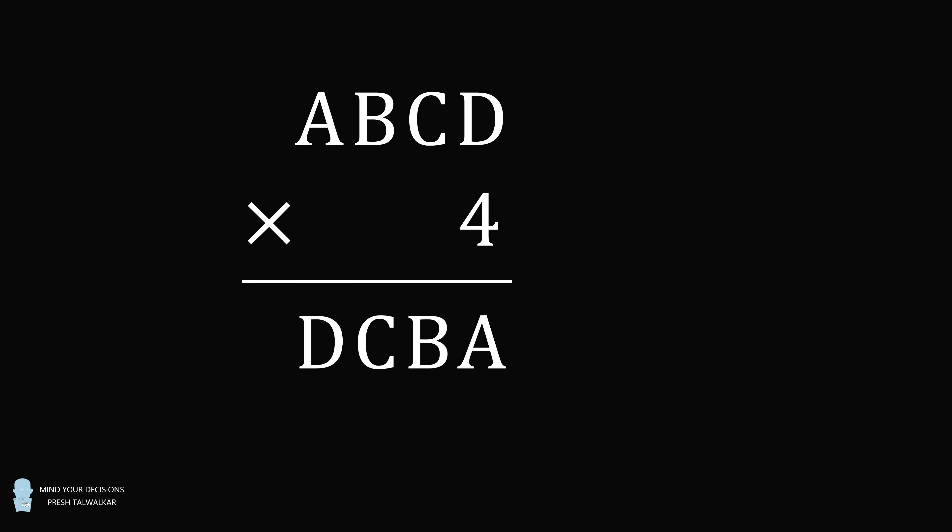Hey, this is Parashita Walker. Here's a fun little puzzle. ABCD multiplied by 4 is equal to DCBA. Each letter is a different digit from 0 to 9, and you have to solve for the value of each letter.